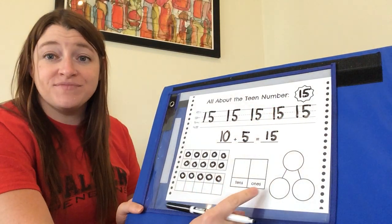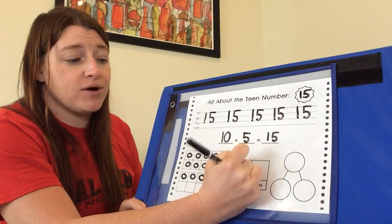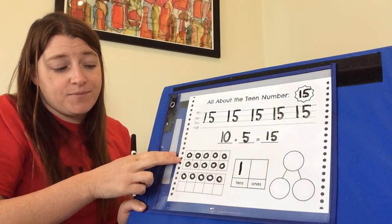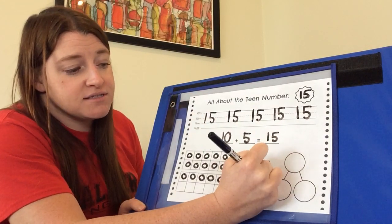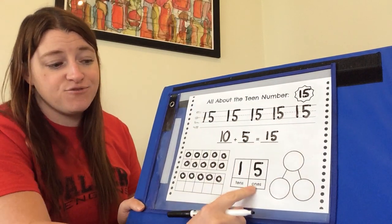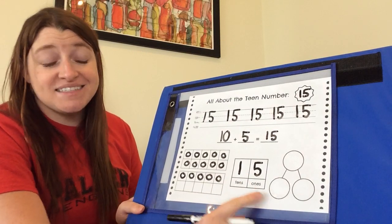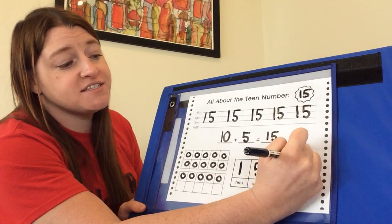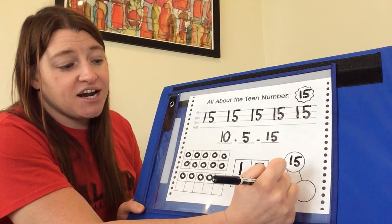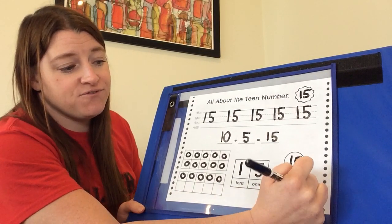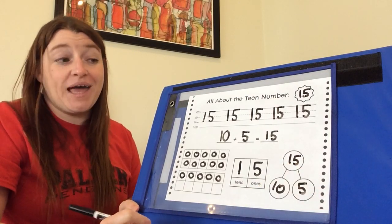Next, let's go on to our chart. And the number 15, we have one 10. That's our first 10 frame up here, a whole group of 10 and five more ones. One 10, five ones. Last, let's go to our number bond. 15 is our total. And our parts are going to be 10 and five.